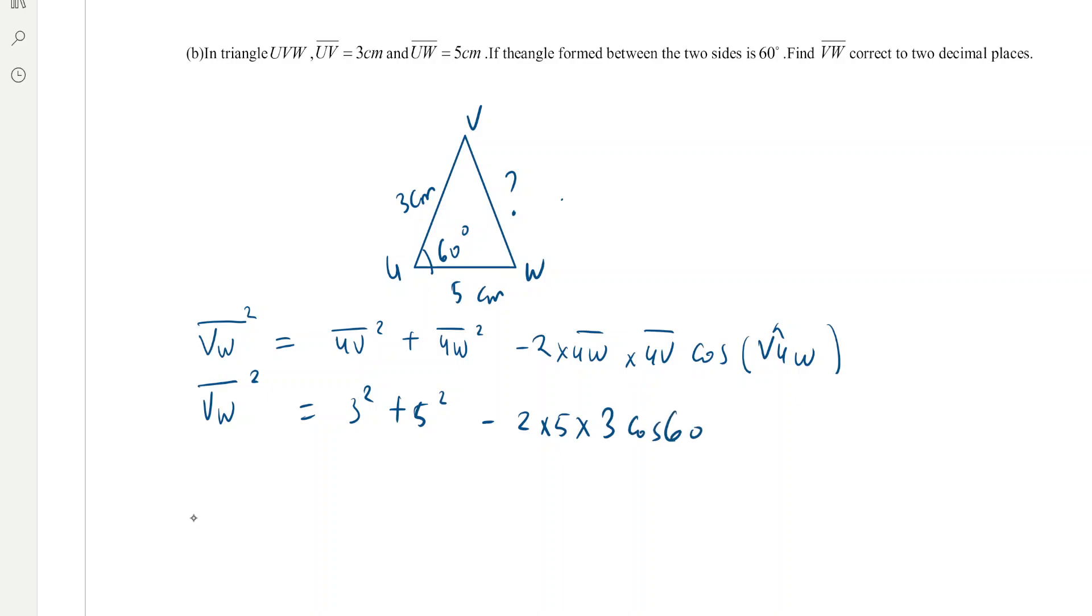So VW square will be 9 plus 25 minus 3 times 1 half. VW square will be 34 minus 15.